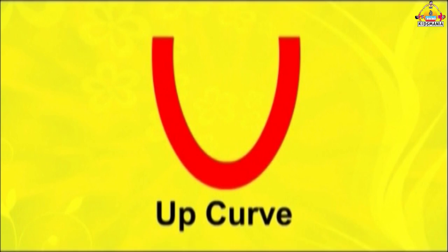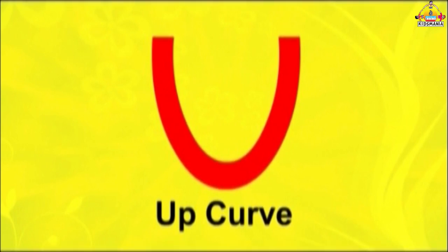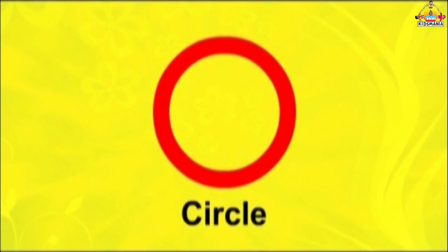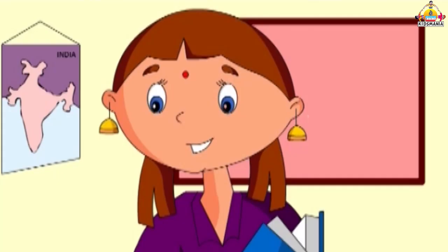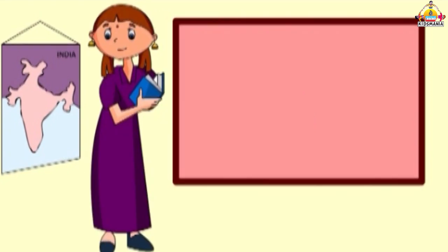And now look at this — this is an up curve. This is a down curve. And now, this is a circle, or O. Let's now practice to write these strokes.